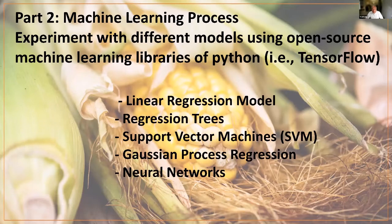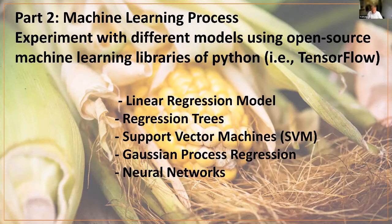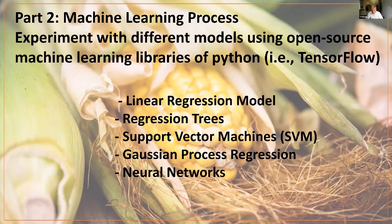Part two is the machine learning process, where we experiment with different models using open-source Python machine learning libraries. These models include linear regression, regression trees, support vector machines, Gaussian process regression, and neural networks. We will evaluate all of them to see which model generates yield predictions closest to the measured values.